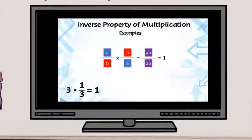So some examples include 3 times 1 third equals 1, 1 fifth times 5 equals 1, and x times 1 over x equals 1.